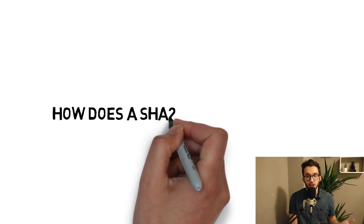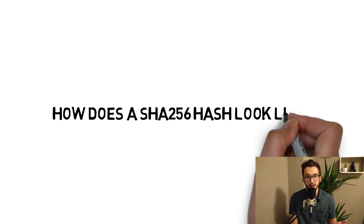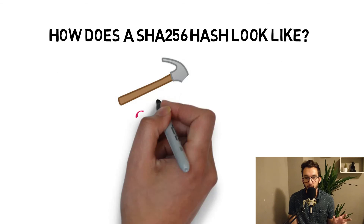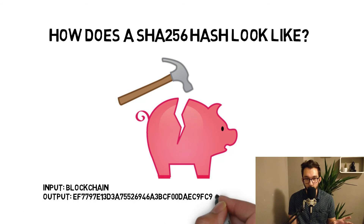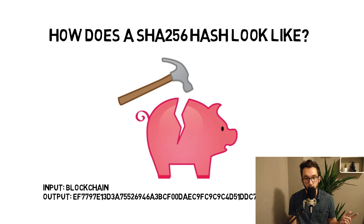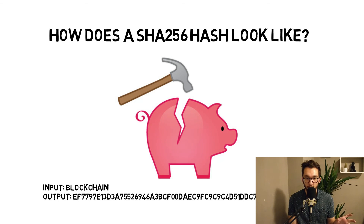How does a hash actually look? With SHA-256, if you put in 'blockchain,' you get some strange hex output shown here. You always get the same output for the same input, but if you change the text to something else you get a totally different output — always the same length. You can try it out; there's a link to a hash generator where you can play around to see how it works and what the benefits are.